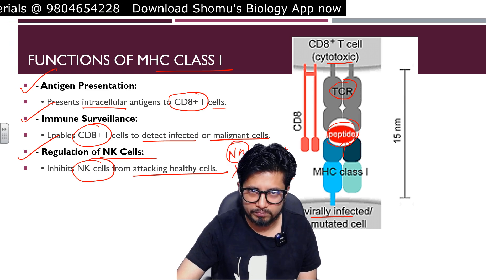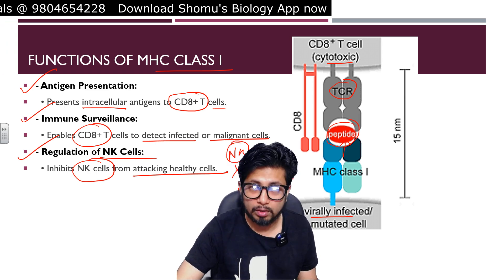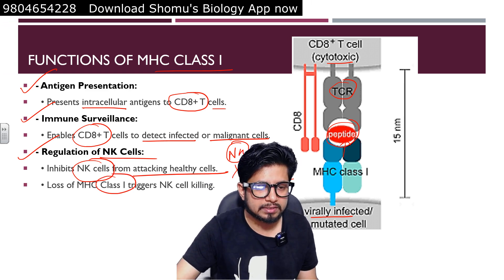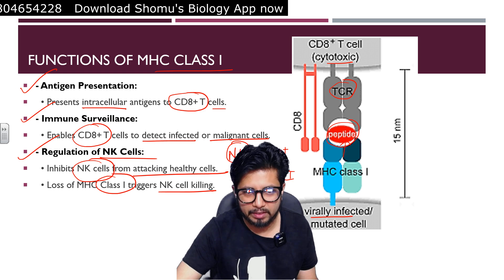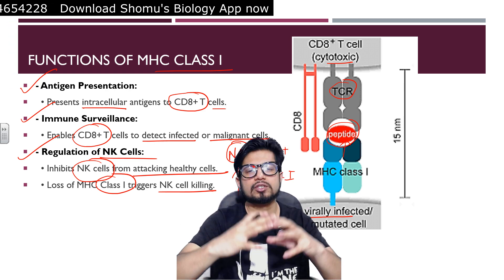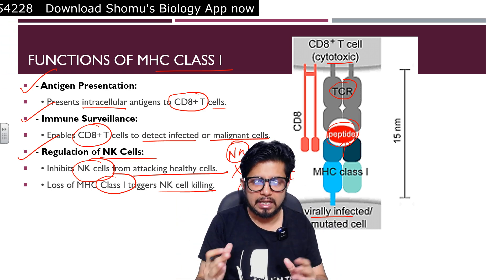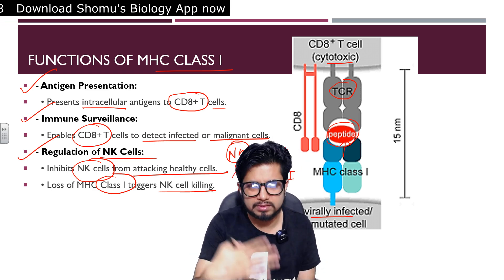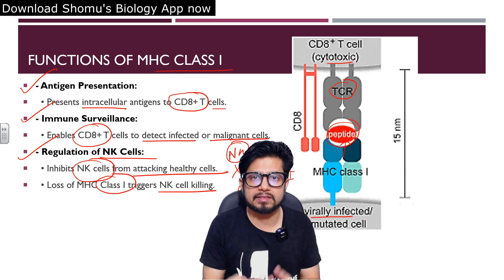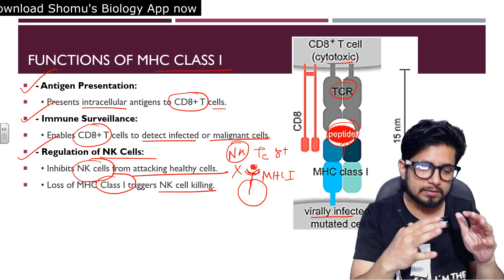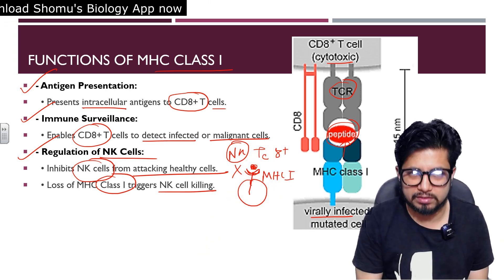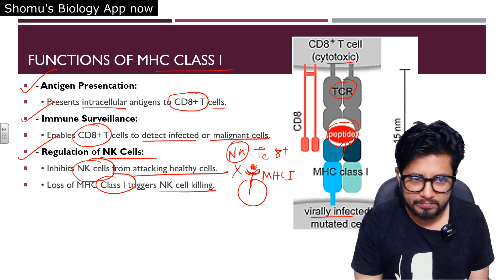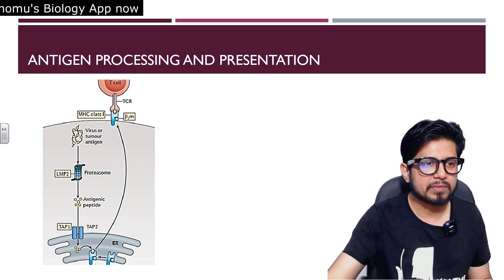If a cell is displaying MHC class 1 with a peptide, only cytotoxic CD8+ T cells will recognize it, and NK cells will not treat it as a threat. However, loss of MHC class 1 triggers NK cell killing — if MHC class 1 is experimentally removed from healthy cells, those cells become targets of natural killer cells.